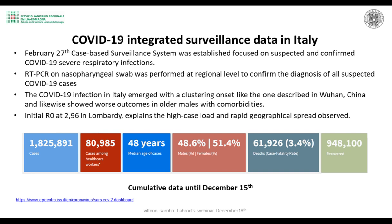In the first wave we saw a much older affected population. This shift is an explanation derived from the misbehavior of many younger people regarding COVID-19 precautions at this time. There is now not much difference in the percentage of males and females affected. The total death toll is more than 60,000, with a case fatality rate of about 3.4%, and nearly 1 million people have recovered.